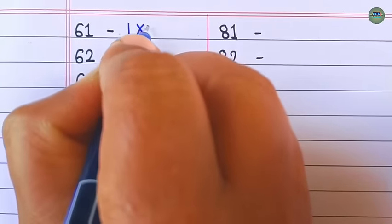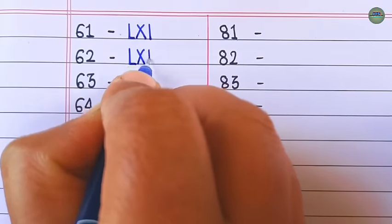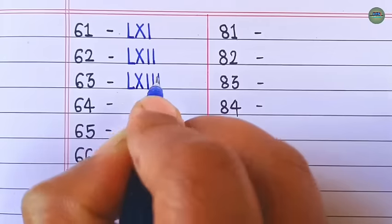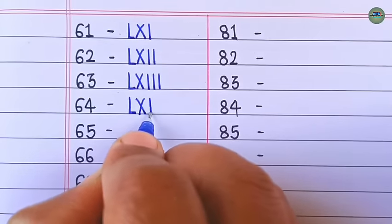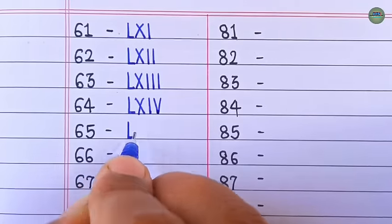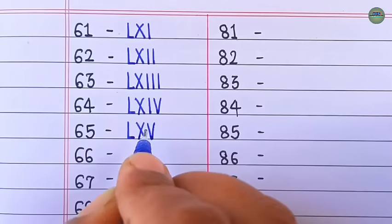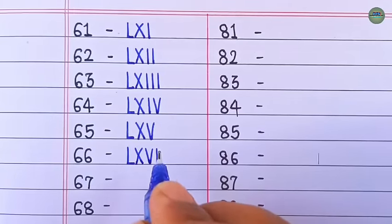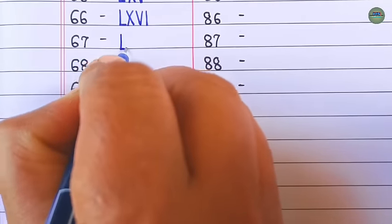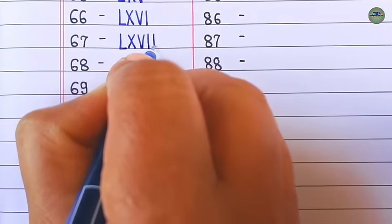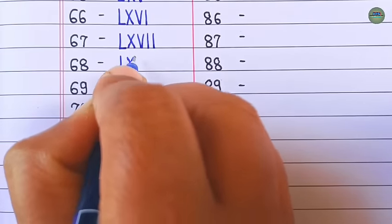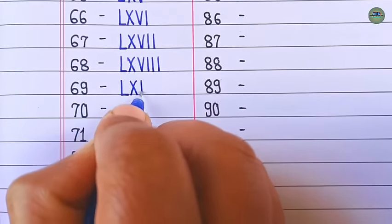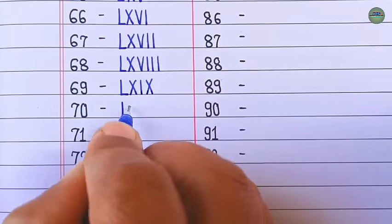61 is LXI, 62 is LXII, 63 is LXIII, 64 is LXIV, 65 is LXV, 66 is LXVI, 67 is LXVII, 68 is LXVIII, 69 is LXIX, 70 is LXX.